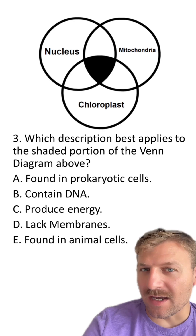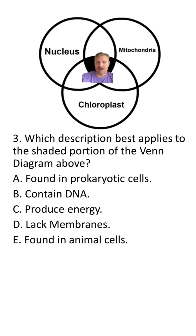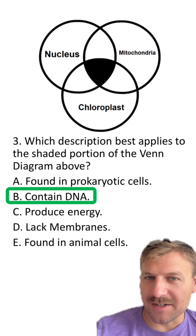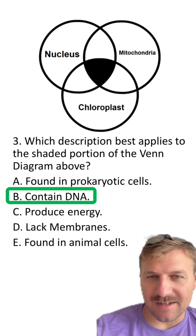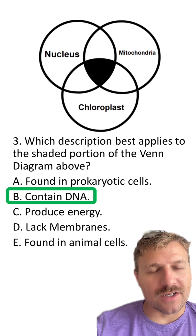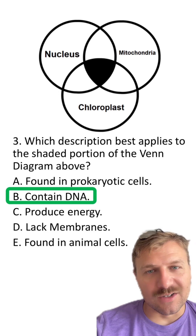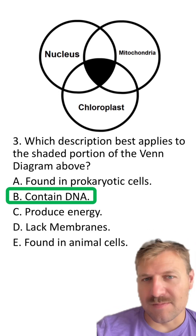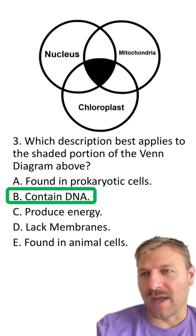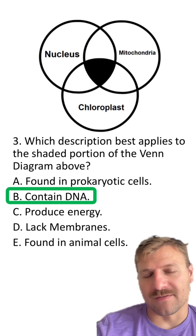Last question: which of the descriptions belongs in that shaded region? We are looking for a characteristic that applies to both the nucleus, mitochondria, and chloroplasts. I will admit this is a difficult question. The answer here is B — they all contain DNA. Even though most of the DNA is found in the nucleus, mitochondria and chloroplasts also contain a little bit of DNA. That's because mitochondria and chloroplasts were once bacteria that created a symbiotic relationship with eukaryotic cells of today.